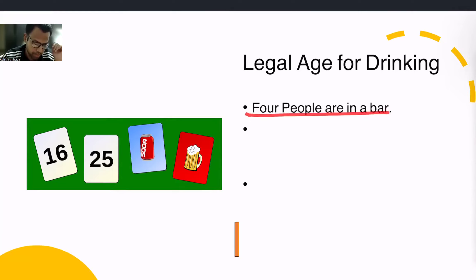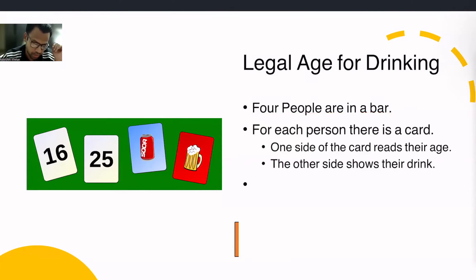Suppose there are four people in a bar, and for each person there is a card kept on the table. One side of the card reads their age, for example there are two cards which are showing the age, and the other side shows the drink that they are having. There are four people.